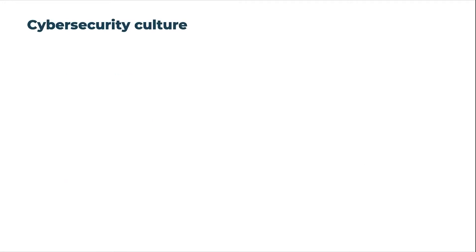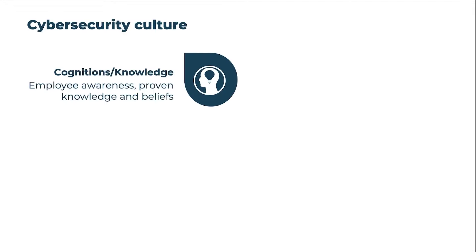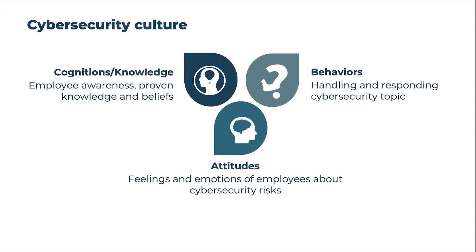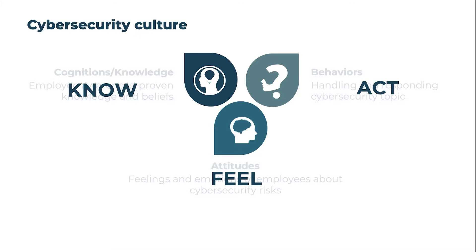Let's start with the simple question: what does cybersecurity culture mean? We divide this term into three areas. First, cognition and knowledge — that contains the employee's awareness, knowledge, and beliefs regarding cybersecurity. Second, behaviors — that describes how to handle and respond to cybersecurity topics. And third, attitudes — this characterizes the feeling and emotions of the employees about cybersecurity risks. Or, in simple words: what employees know, how they act, and what they feel.